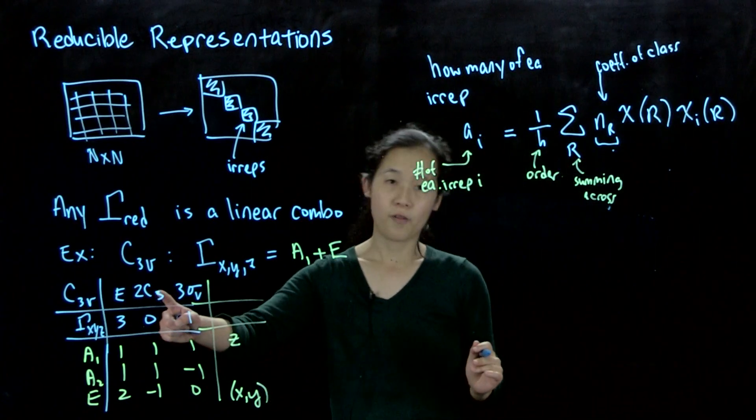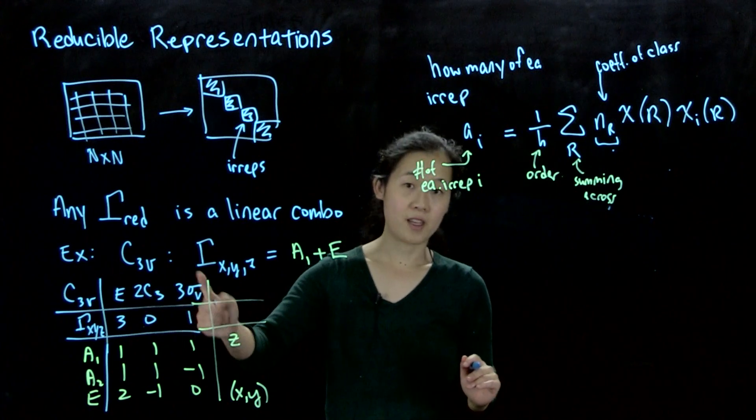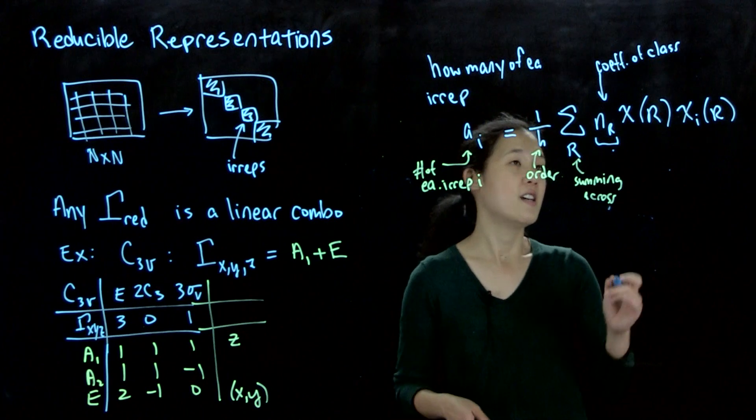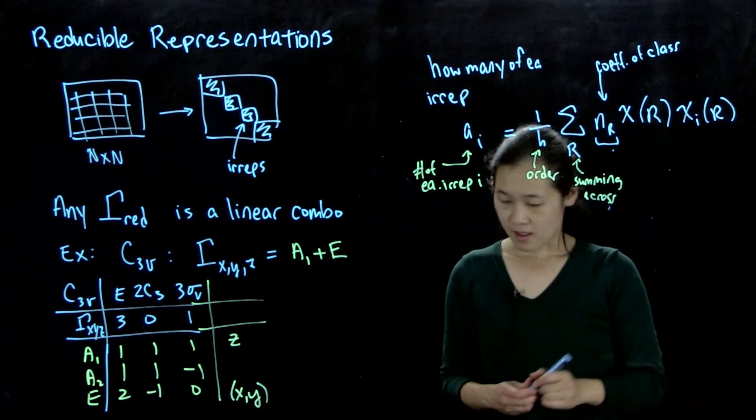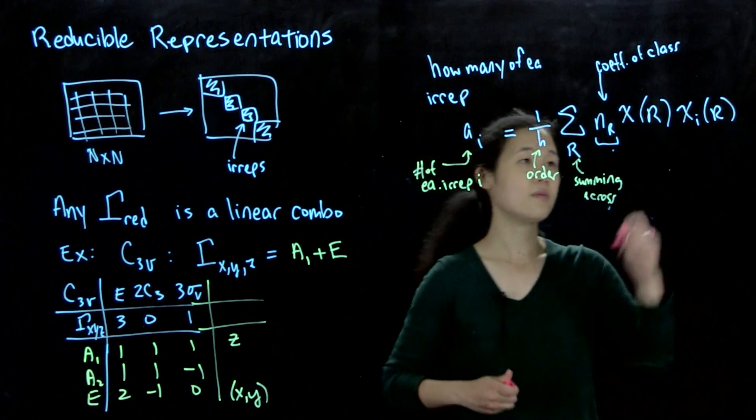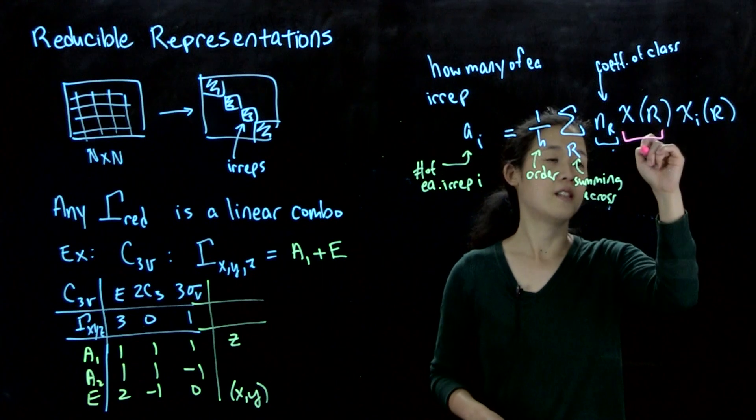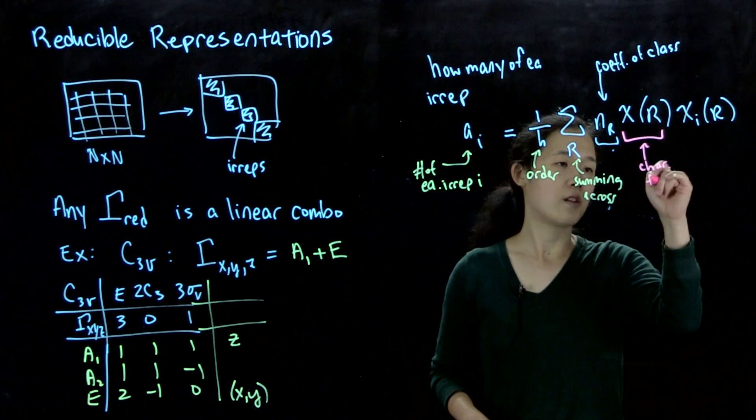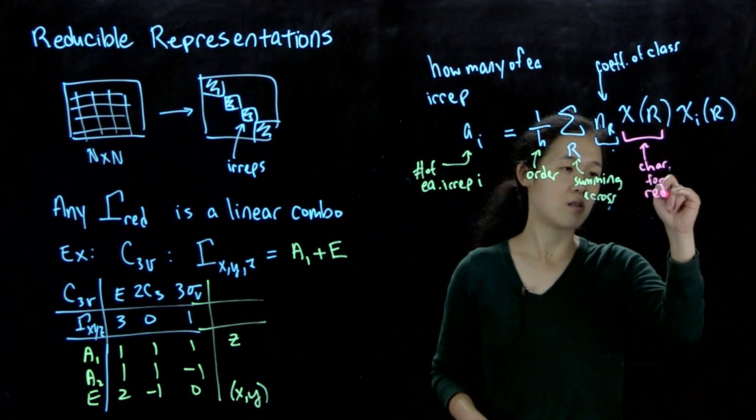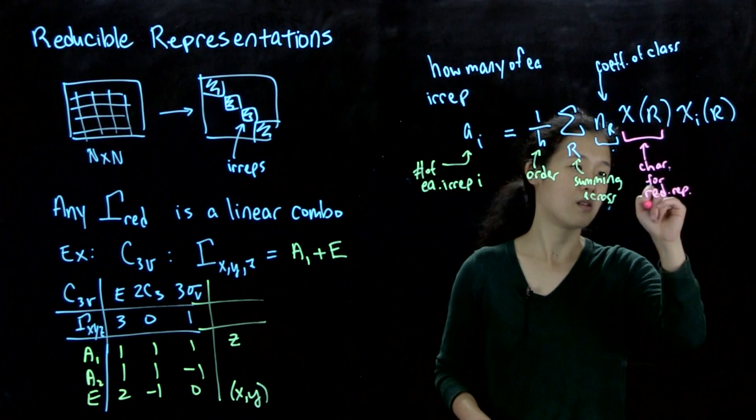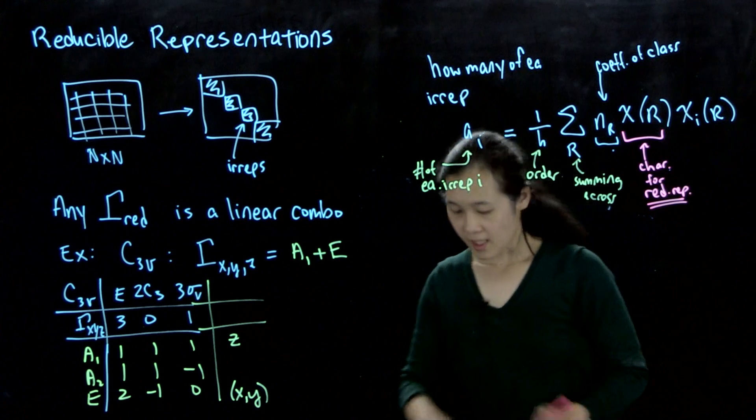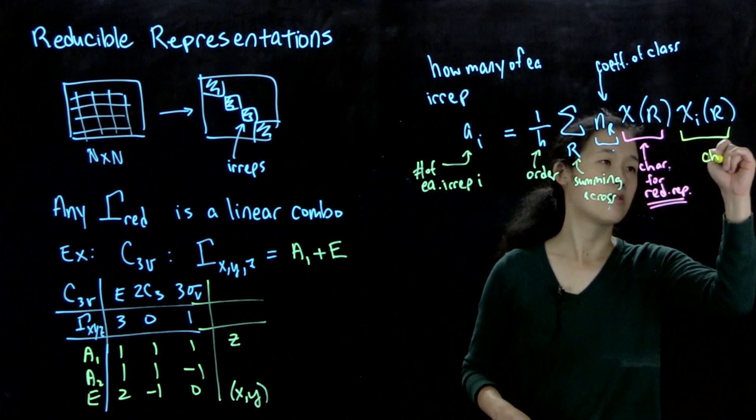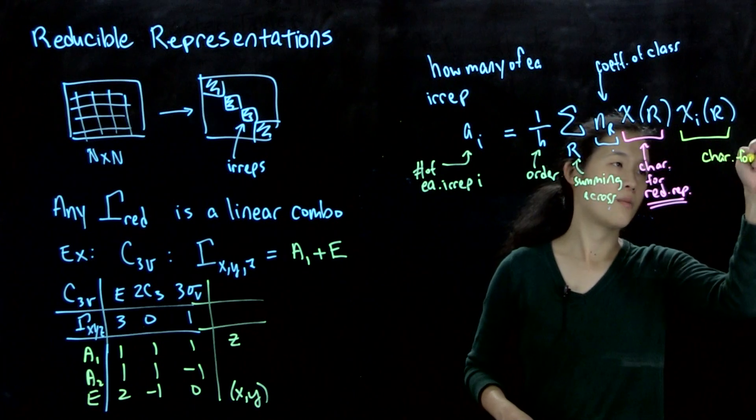For example, the coefficient of C3 is 2, the coefficient of sigma v is 3, because there's 3 symmetry operations within that class. And then here is the character for the reducible representation. And then this is the character for the irrep that we're looking at.